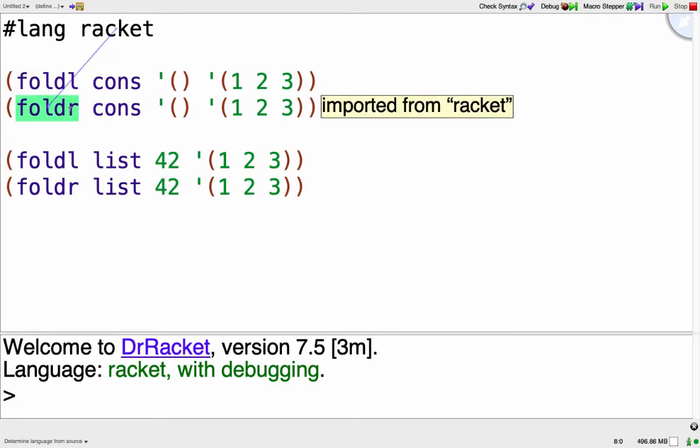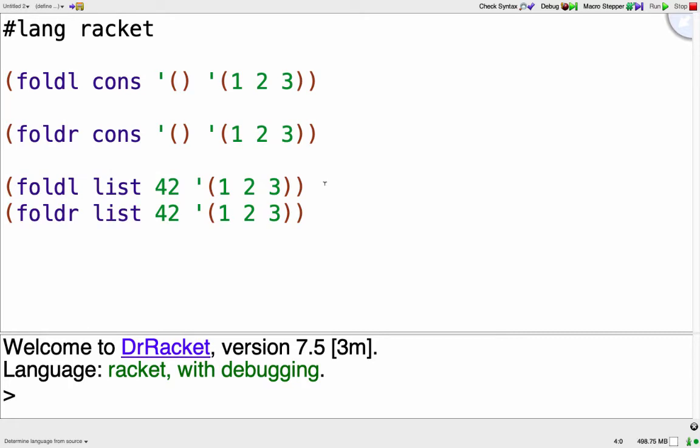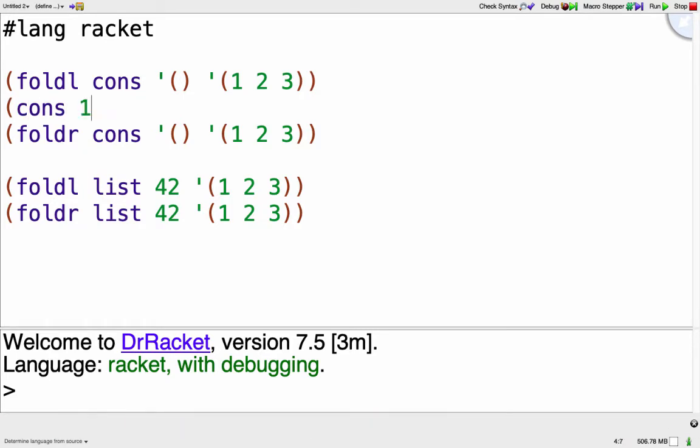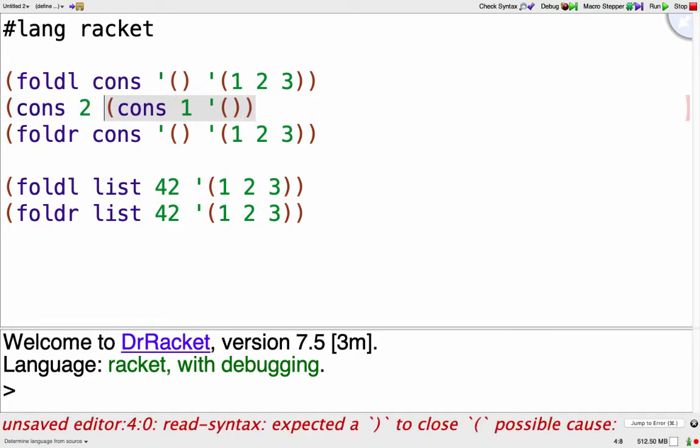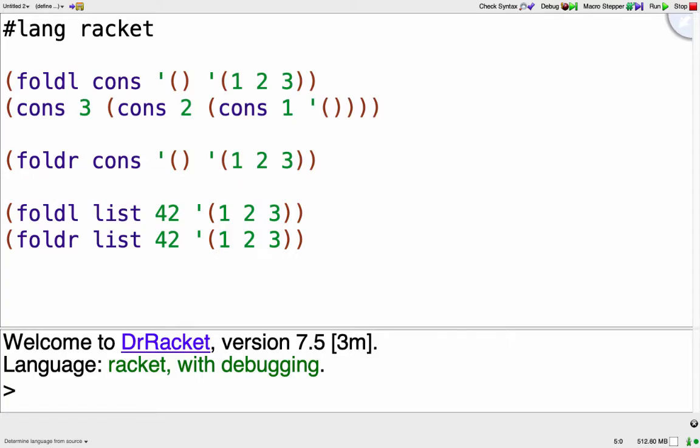And here I'm using foldl or foldr in each of the cases. And I'm using cons and list. And with cons and list, obviously the order is going to matter, unlike plus. For example, on this one, we know that foldr starts with the first element of the list. So the first call on the inside would be cons of 1 to the empty list. And then it keeps working its way out, cons of 2 to the result of that, and then cons of 3 to the result of that. So try and do that for the rest of them.